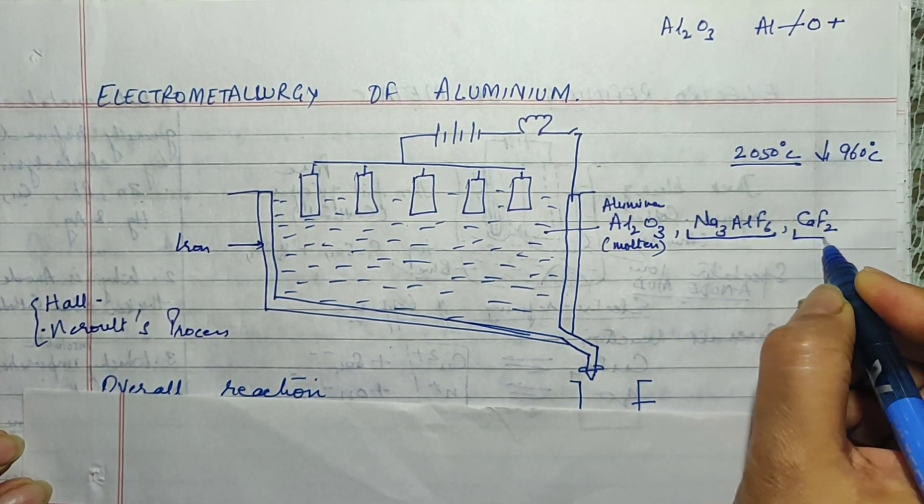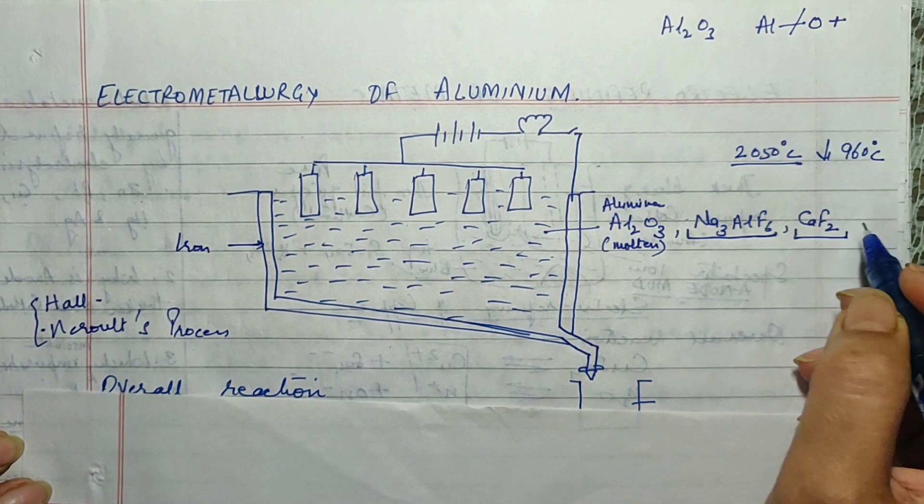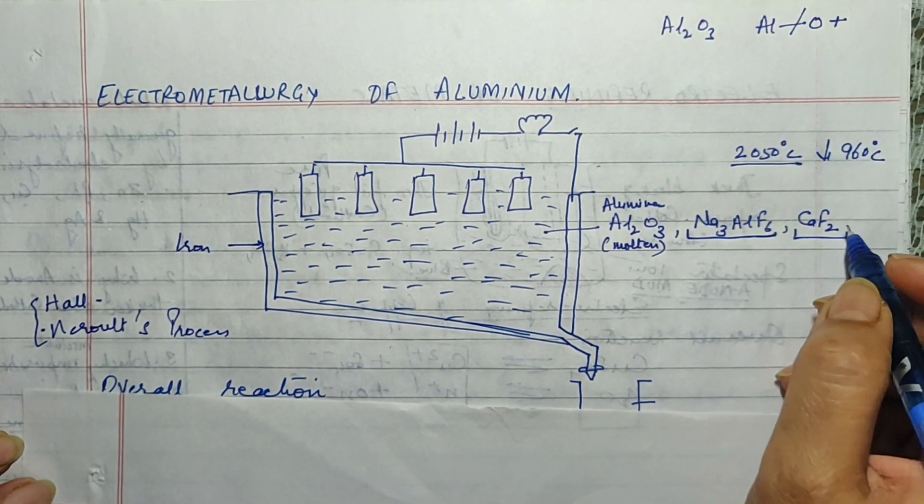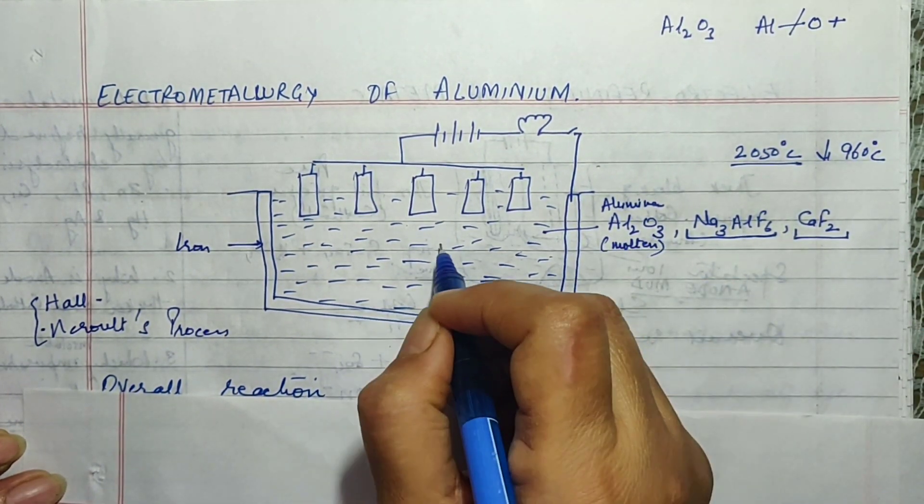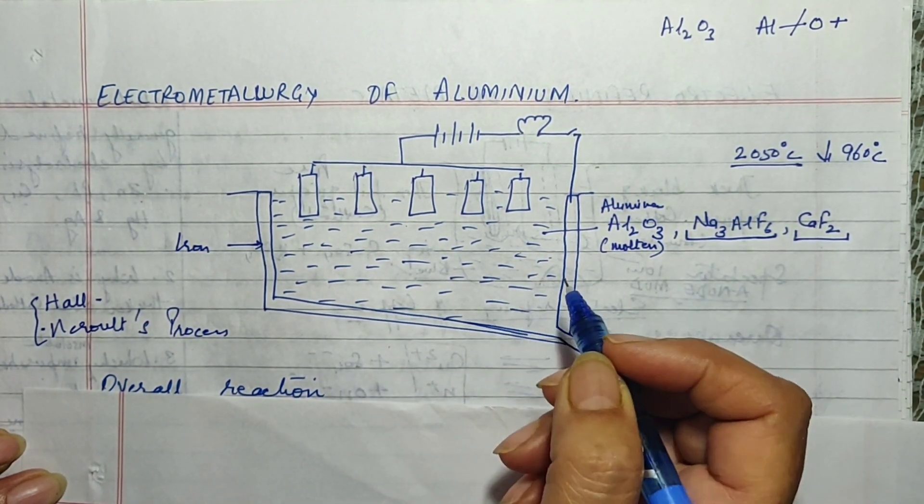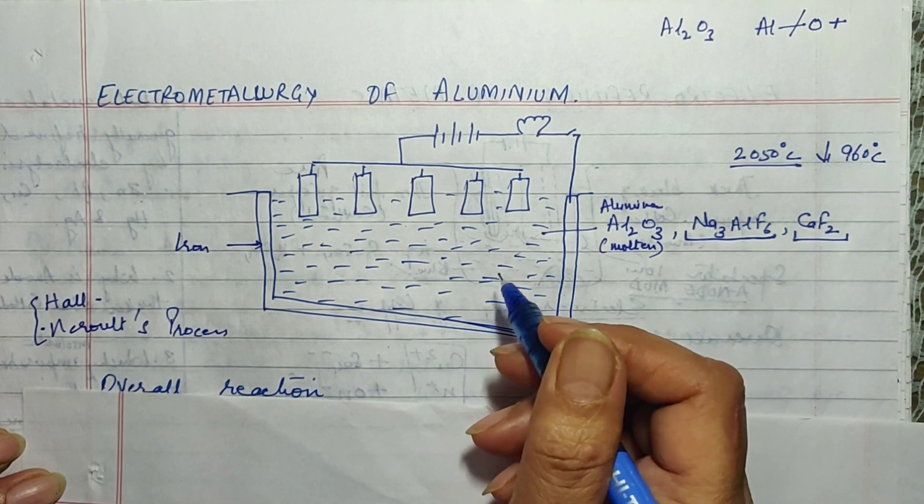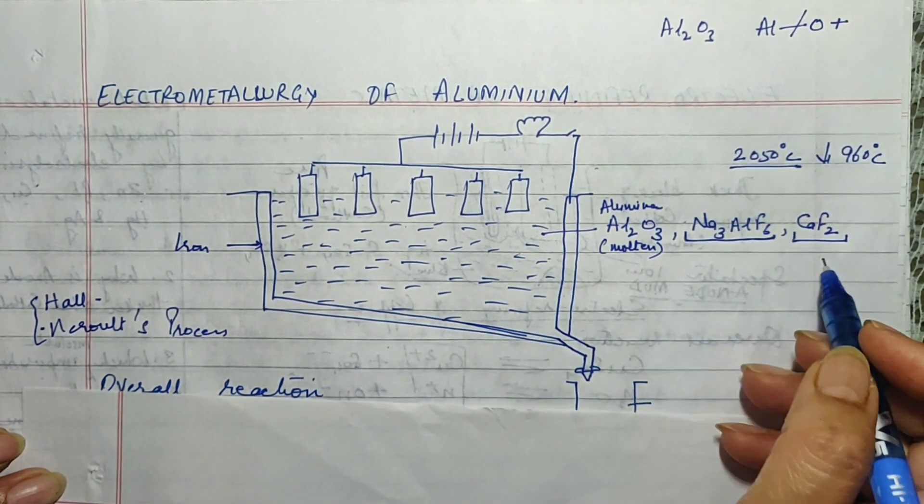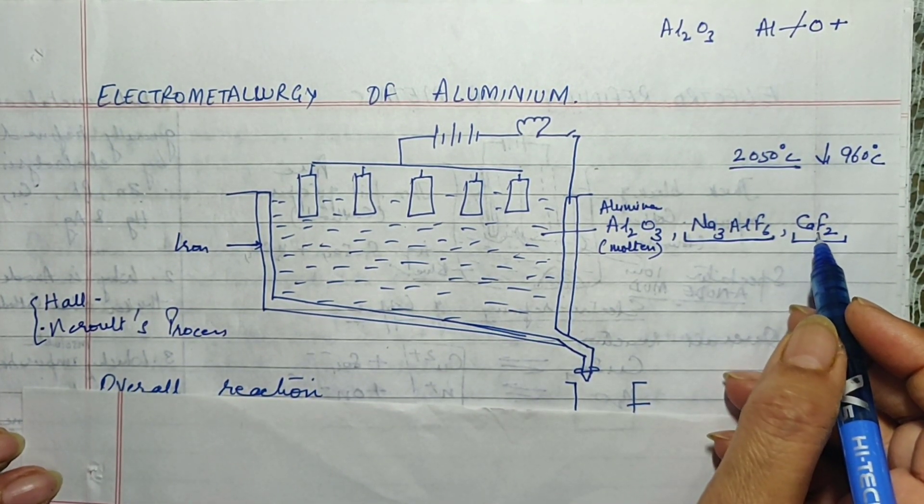Then fluorospar was another thing which was added to it. Fluorospar is calcium fluoride. Actually as I told you alumina is not a very good conductor. So fluorospar helps in the mobility of the ions. It also acts as a electrolyte. It helps as a solvent you can see.